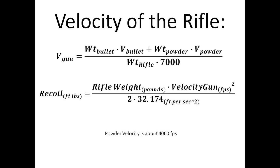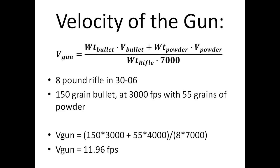For an example, take a hypothetical 8-pound rifle — call it a .30-06 — with a 150-grain bullet at 3,000 feet per second. Out of the reloading manual, you'd expect about a 55-grain powder charge with that load. So: 150 grains times 3,000 feet per second for the bullet, plus 55 grains times 4,000 for the powder, all divided by 8 times 7,000 for the rifle weight converted to grains. That gives a gun velocity of 11.96 feet per second.